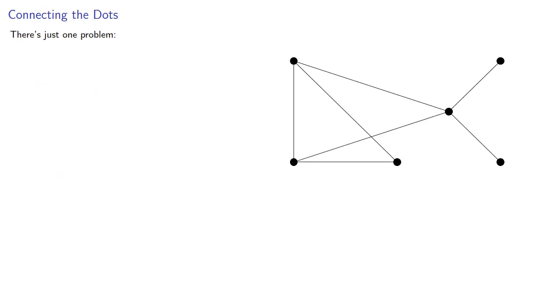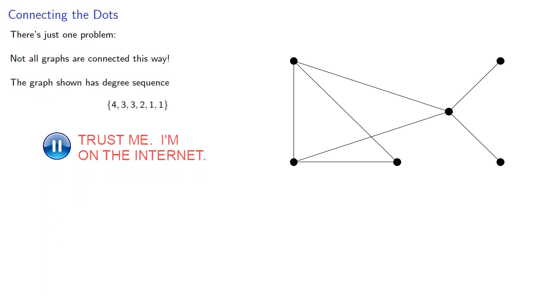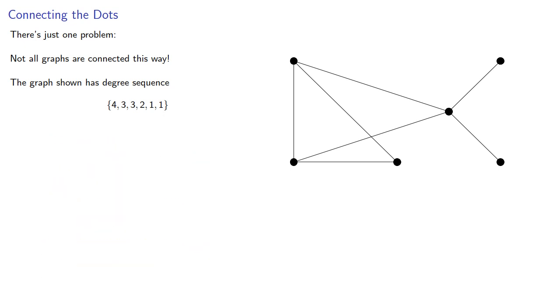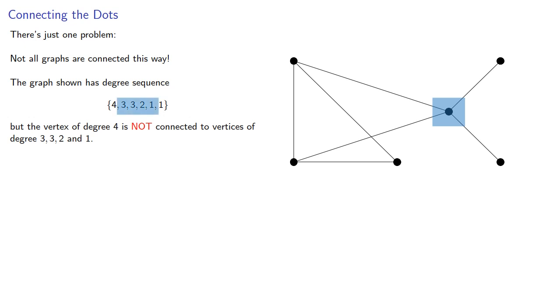There's just one problem. Not all graphs are connected this way, so the graph shown has degree sequence. But the vertex of degree 4 is not connected to vertices of degrees 3, 3, 2, and 1.